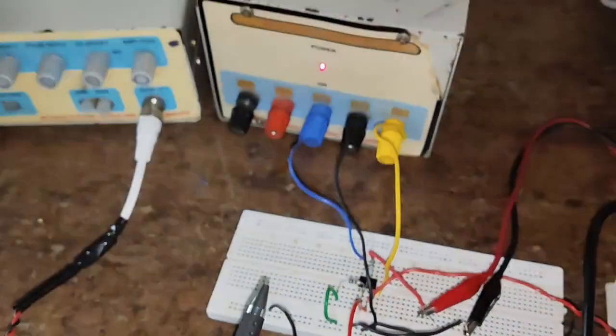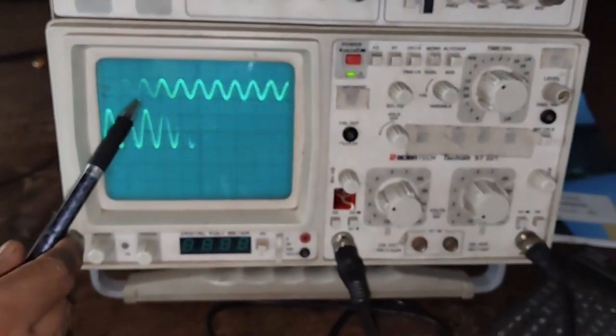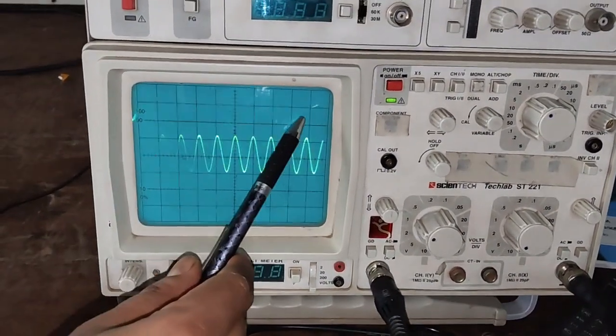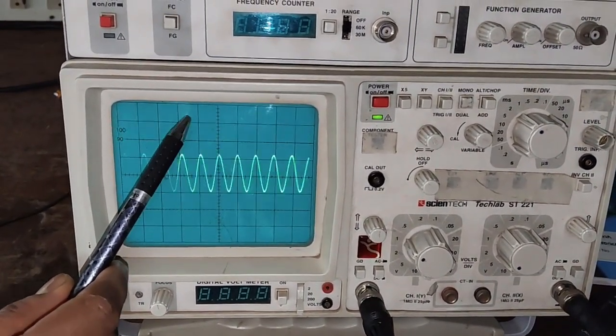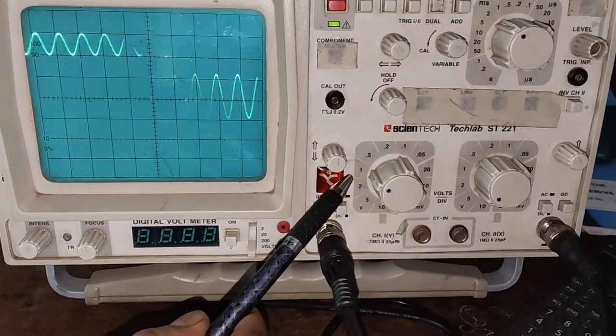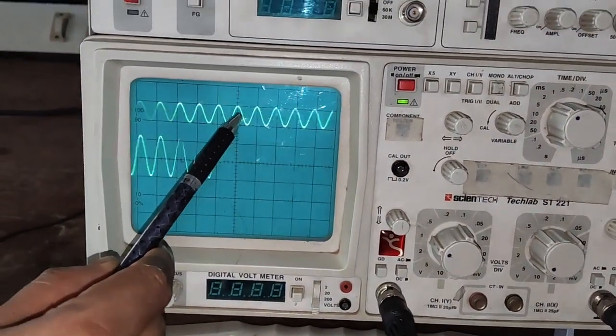The same waveform can also be observed in the CRO. Here we can see the upper waveform is the input signal. It has 1 volt - that's 1 division times 1 volt per division, which equals 1 volt.